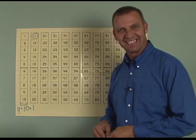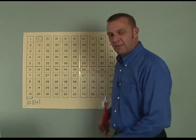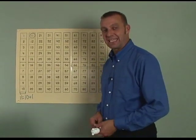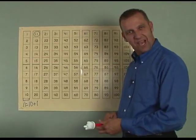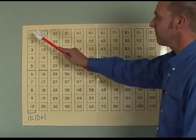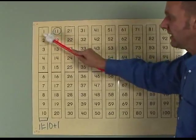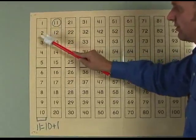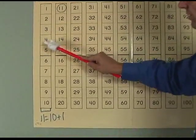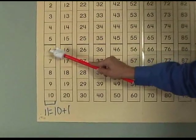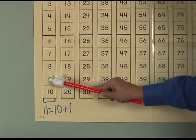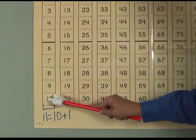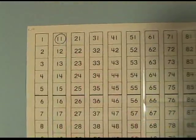Okay, boys and girls, now we need to count from the very beginning. Let's count together. Ready? Begin. 1, 2, 3, 4, 5, 6, 7, 8, 9, 10, 11. Very good.